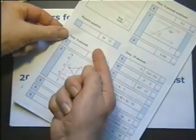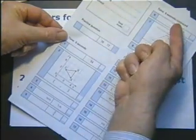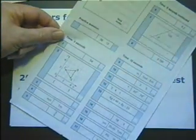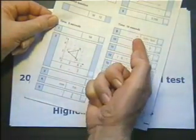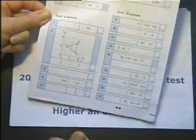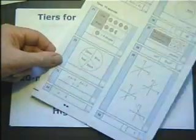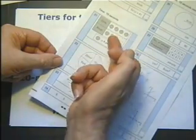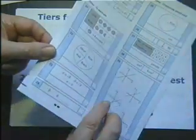The mental test consists of a section of questions where you are allowed 5 seconds to work out and write down your answers, a set of questions where you are allowed 10 seconds, and a set of questions where you are allowed 15 seconds to work out and write down your answers.